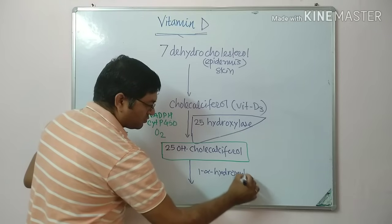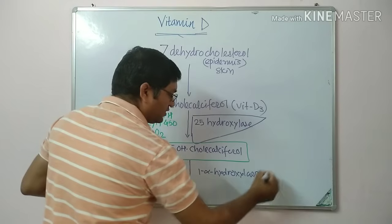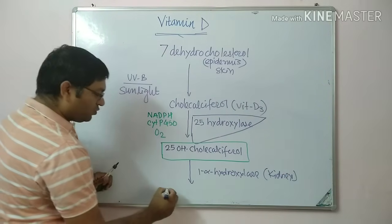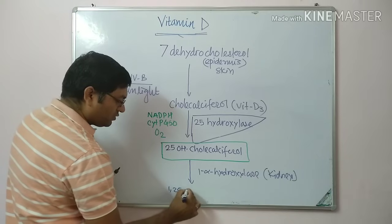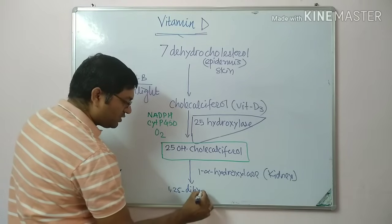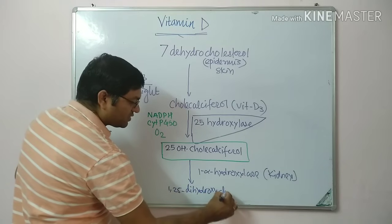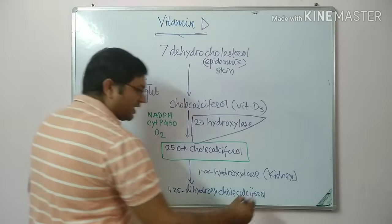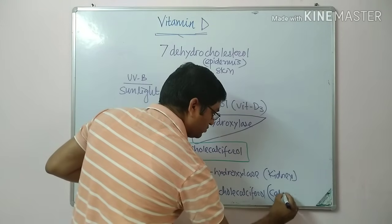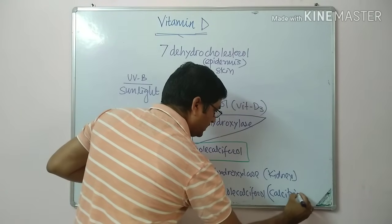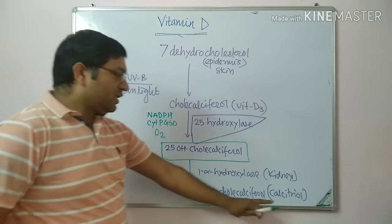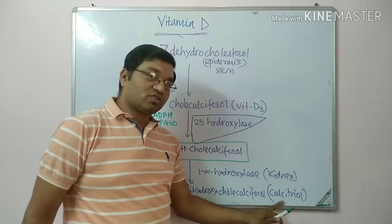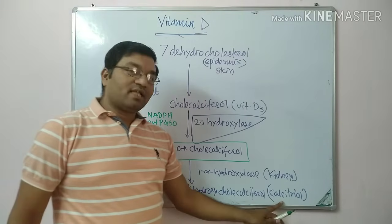In the kidneys, 25-hydroxycholecalciferol is converted into 1,25-dihydroxycholecalciferol, also known as calcitriol, which is the active form of vitamin D. Calcitriol contains three hydroxy groups, which is why it is called calcitriol.